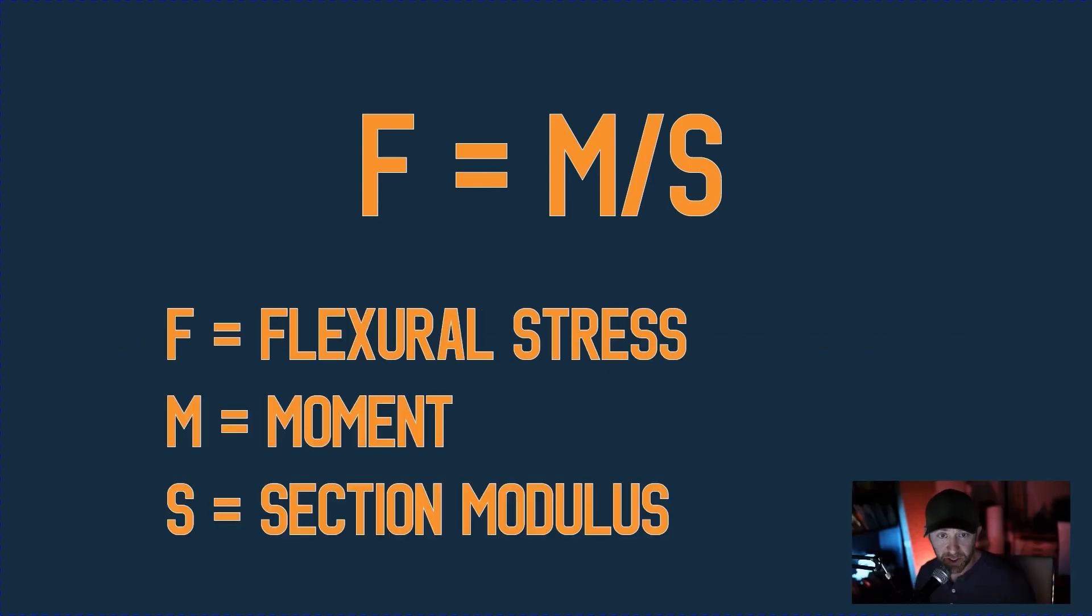If we look at the variables, the equation F equals M over S. F is the flexural stress, which is the resistance to deformation. So how much the beam is going to resist bending. M is the bending moment and S is the section modulus. So we'll talk about both of these in a minute. But the important thing to note that I'm probably going to repeat myself a bunch of times is that if you want to decrease the flexural stress, you have to either decrease the bending moment or increase the section modulus of a beam.